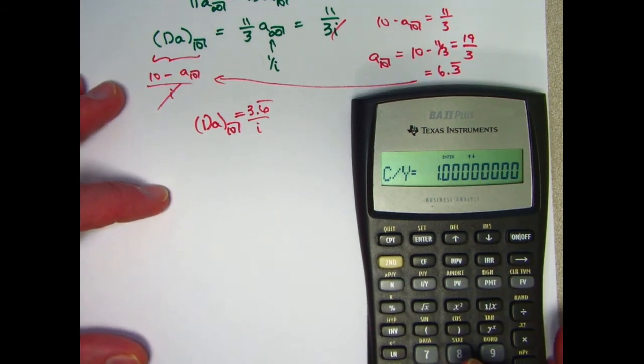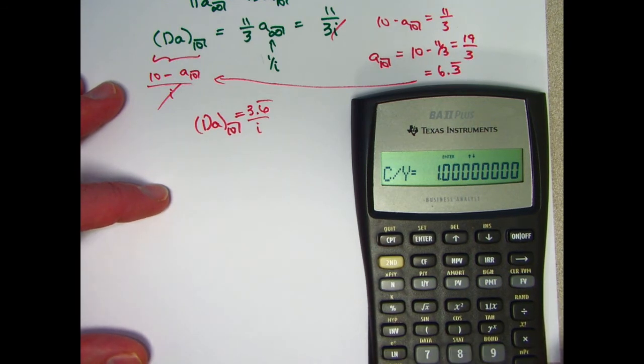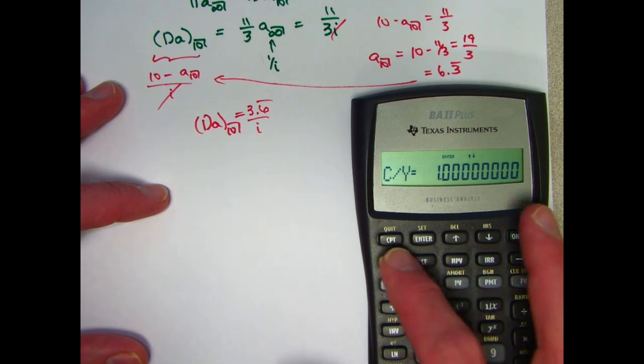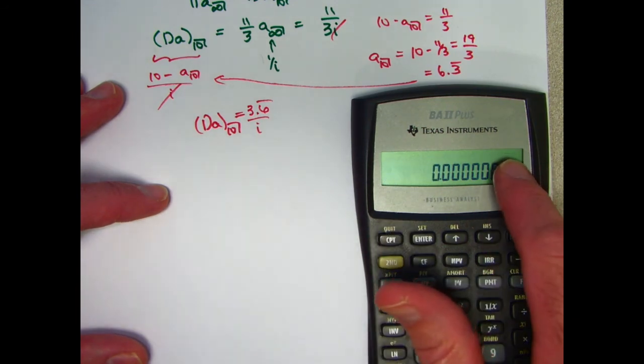That's just a standard way that I do things. And then we can enter the other financial data here. We are set, I believe, to annuity immediate. Let me just double check that here. Yeah, you don't see a BGN up there.